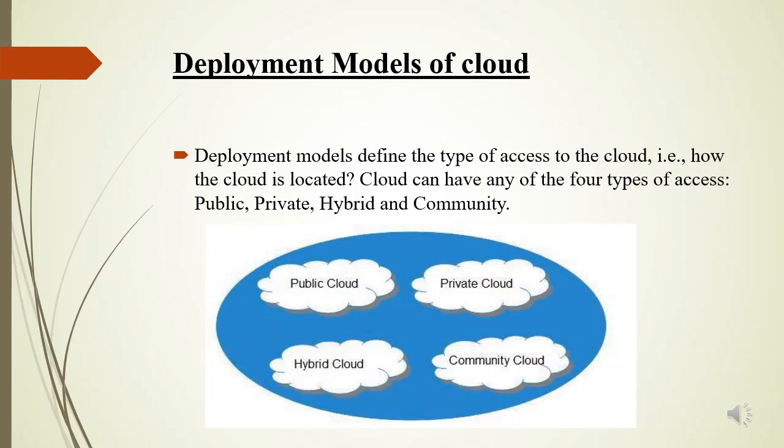Deployment models define the type of access to the cloud — how the cloud is located. Cloud can have any of four types of access: public, private, hybrid, and community.